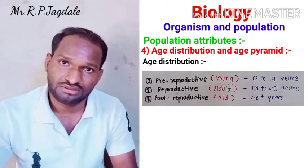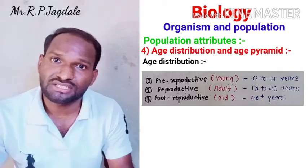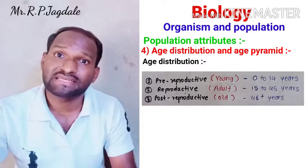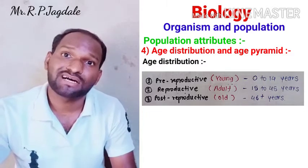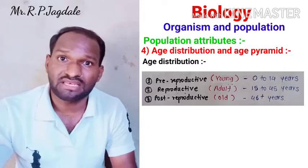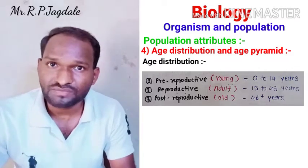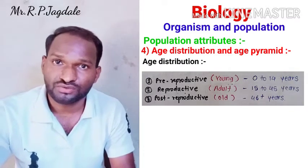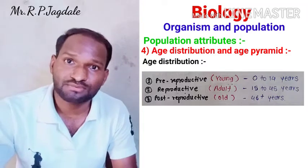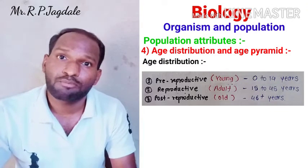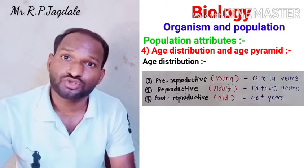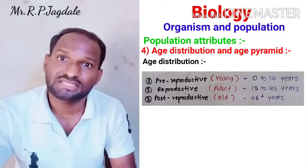The pre-reproductive stage is the young stage, which is from 0 to 14 years. The reproductive stage is the adult stage, where human beings can reproduce, from 15 to 45 years — up to which the menstrual cycle of the female continues. The post-reproductive stage is the old stage, which is above 45 years — up to 90, 100, or above 100. In this stage organisms cannot reproduce.